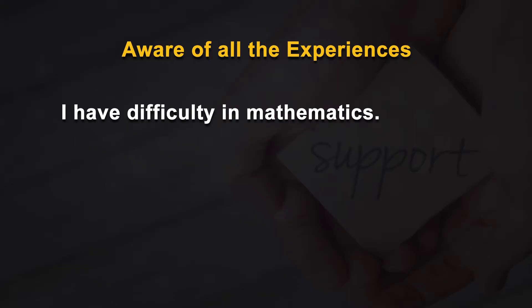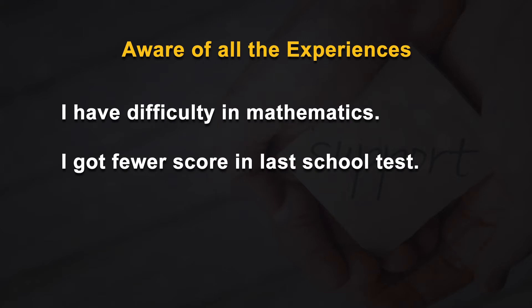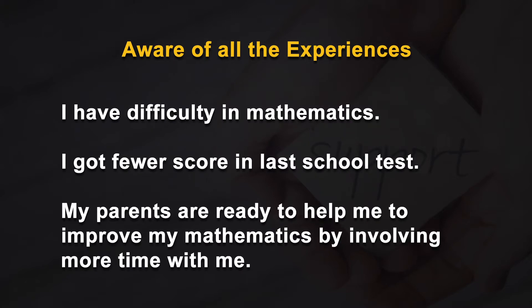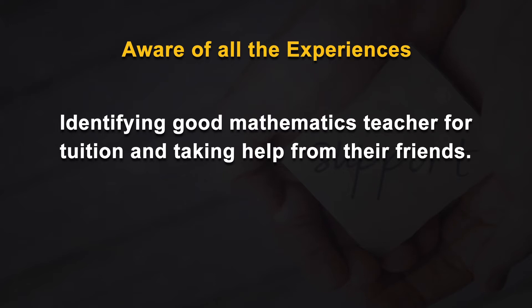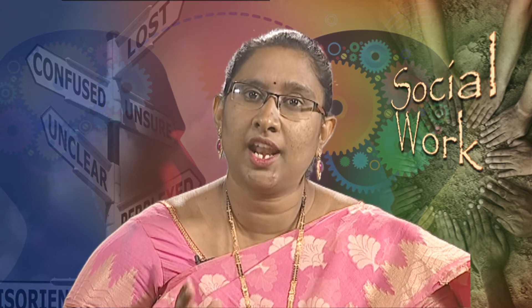Aware of all the experiences: Fully functioning persons are aware of all their experiences, both positive and negative. There is no need for distortion or denial of any experience. For example: 'I have difficulty in mathematics. I got a fewer score in the last school test. My parents are ready to help me to improve my mathematics by involving more time with me.' My behavior of not scoring good marks in mathematics is not resulting in conditional approval or conditional regard. When it is conditional, I may need to avoid such behavior, engaging in defensive actions.